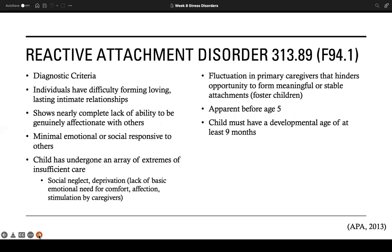What places a child at risk for RAD? Parental and caregiver contributions, child contributions, and environmental contributions. We see this very prevalently in foster children because of the fluctuation in primary caregivers and homes, which hinders them from building or forming meaningful or stable attachments. It presents before the age of five, and the child must have a developmental age of at least nine months.